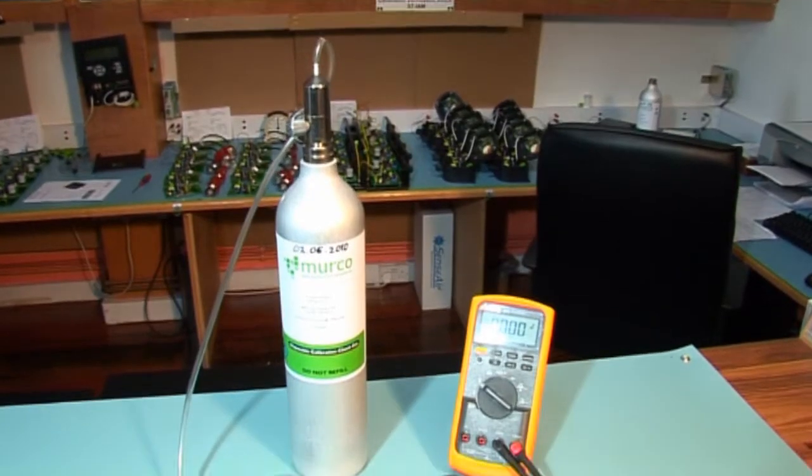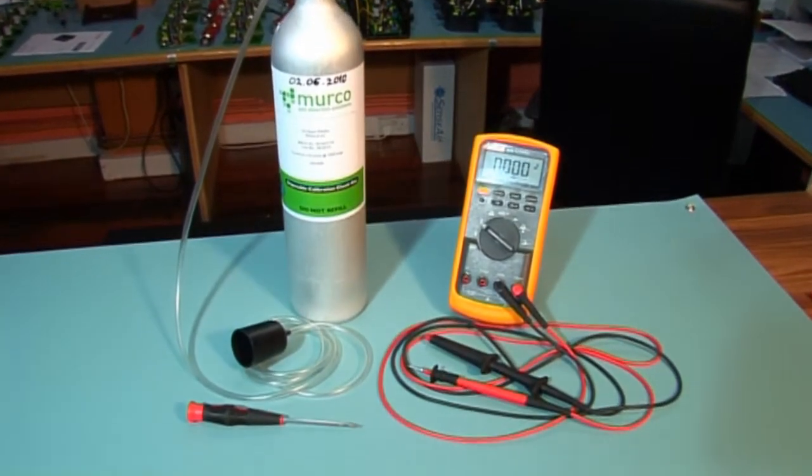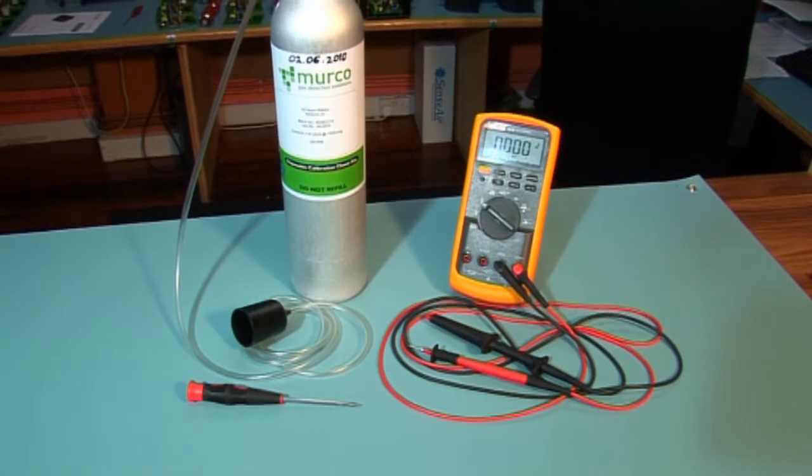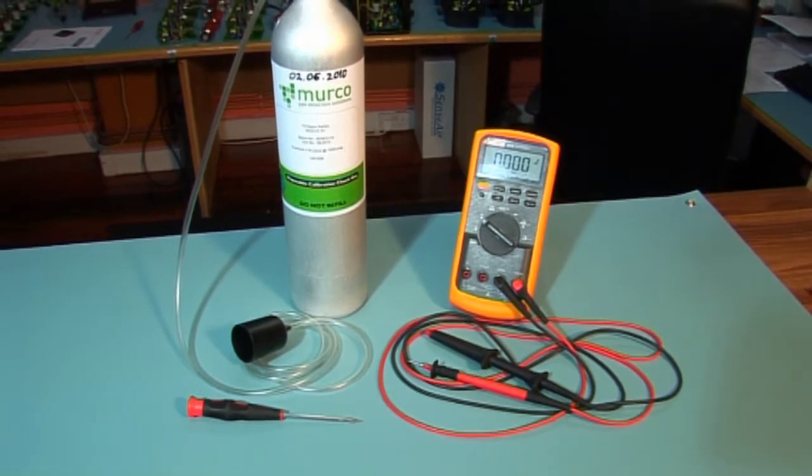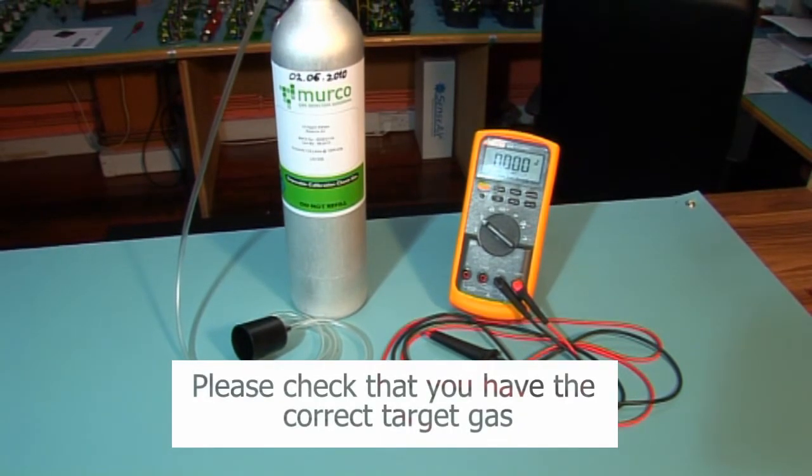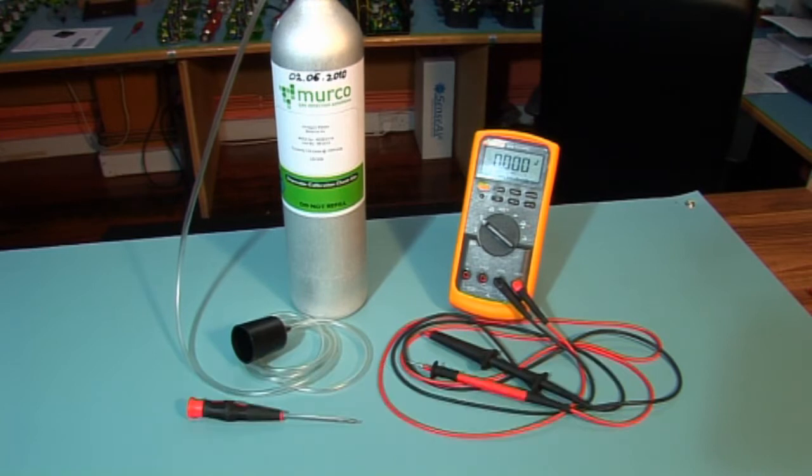The tools required are a digital voltmeter with a resolution of two decimal places, a crocodile clip, a flat-bladed screwdriver and a Merco calibration kit, which includes your cylinder of calibration gas, flow regulator, flexible non-absorbent tubing and a vented calibration hood.